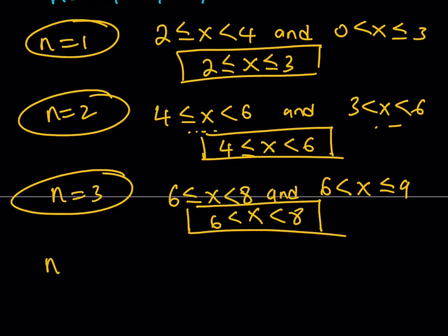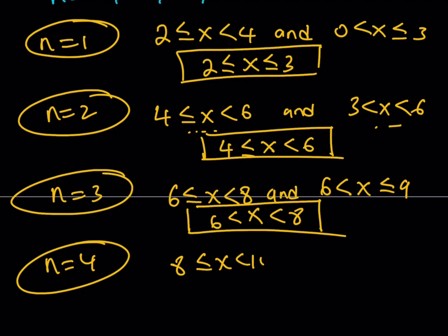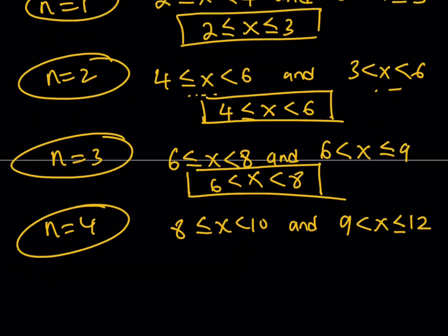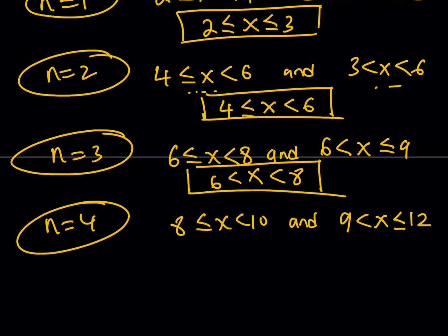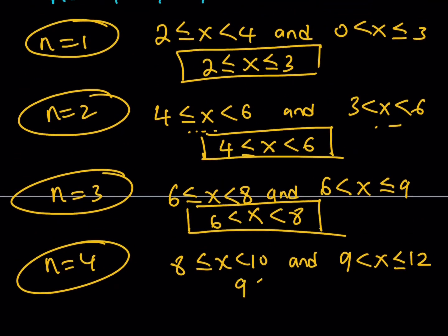Finally, for n equals 4, substituting gives x between 8 and 10, and x between 9 and 12. The intersection of these two inequalities is x between 9 and 10, with neither endpoint inclusive.